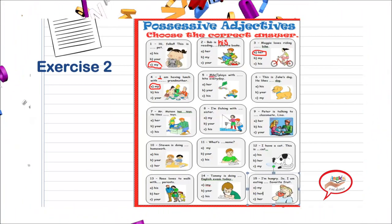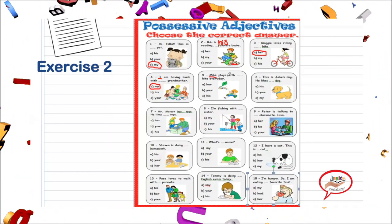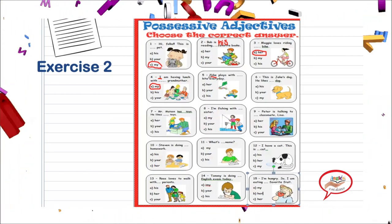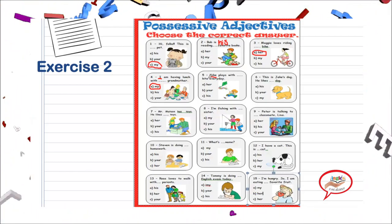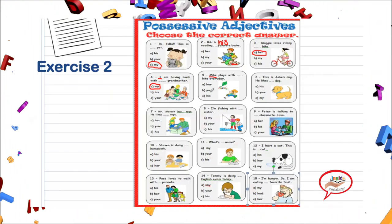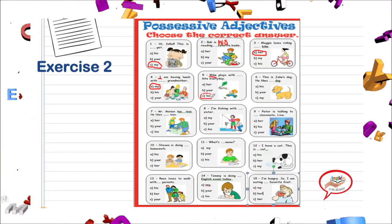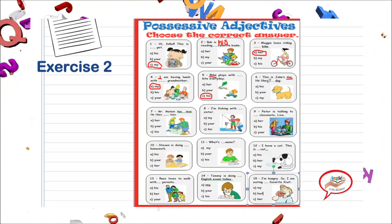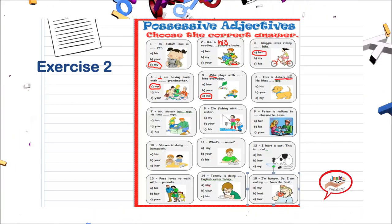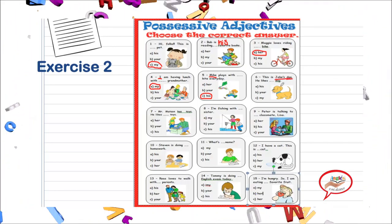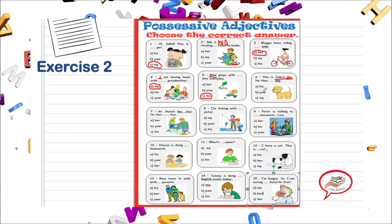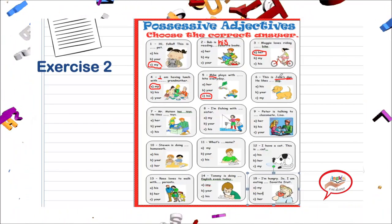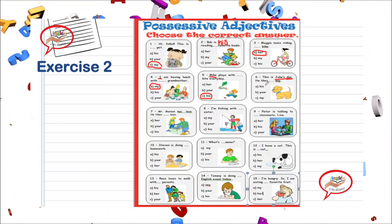Mike plays with his late every day. Mike es a boy, ¿verdad? Entonces ¿qué possessive adjective utilizamos para un boy? His. Next one: This is Jake's dog. He likes his dog — ¿de quién es el perro? De Jake, y Jake es un boy. Very good. Por lo tanto va a ser his.